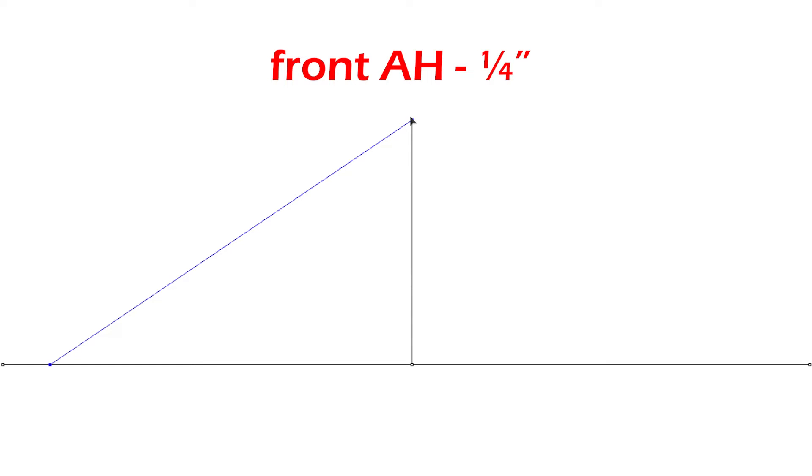Same for the front. Front armhole minus quarter of an inch. Place the end of the ruler at the shoulder point and swing the ruler until it hits the bicep. So now this is the bicep.